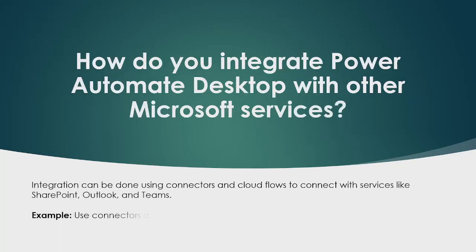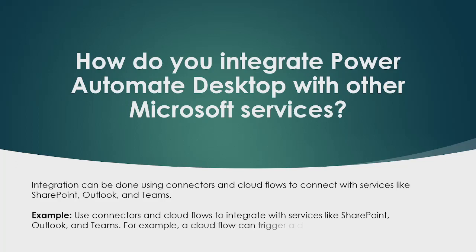The next question is: how do you integrate Power Automate Desktop with other Microsoft services? Integration can be done using connectors and cloud flows to connect with services like SharePoint, Outlook, and Microsoft Teams. For example, a cloud flow can trigger a desktop flow to process incoming emails and update a SharePoint list.